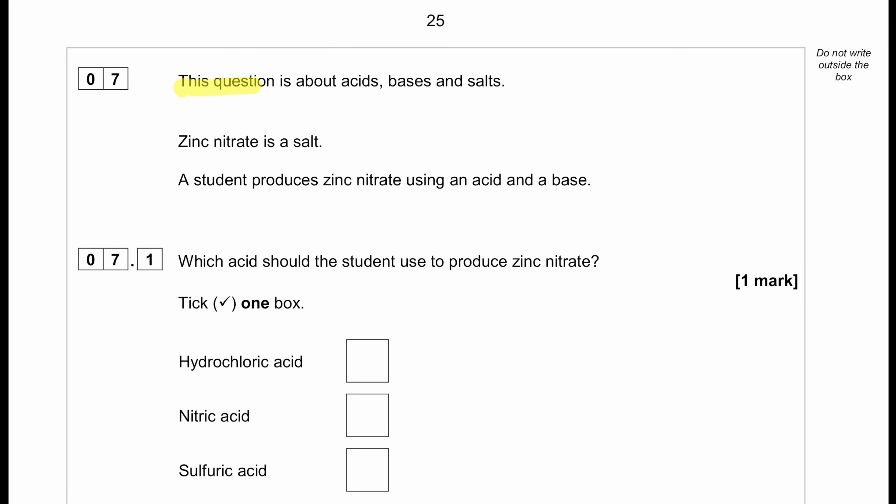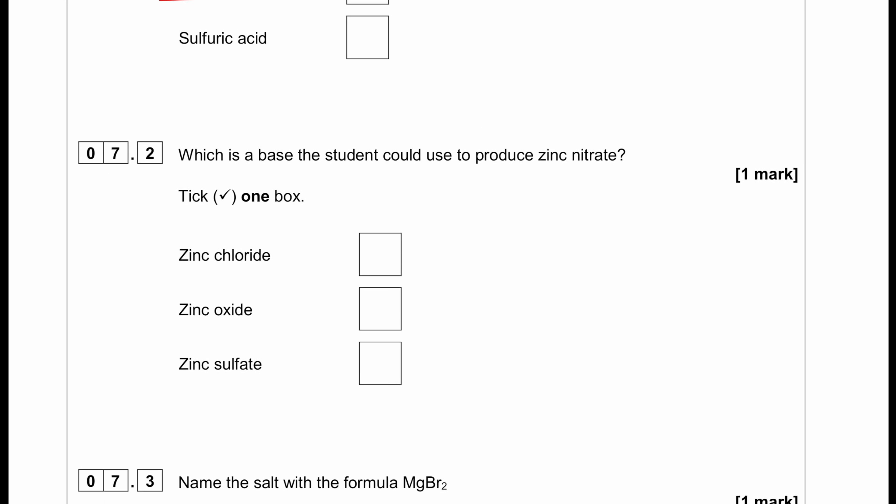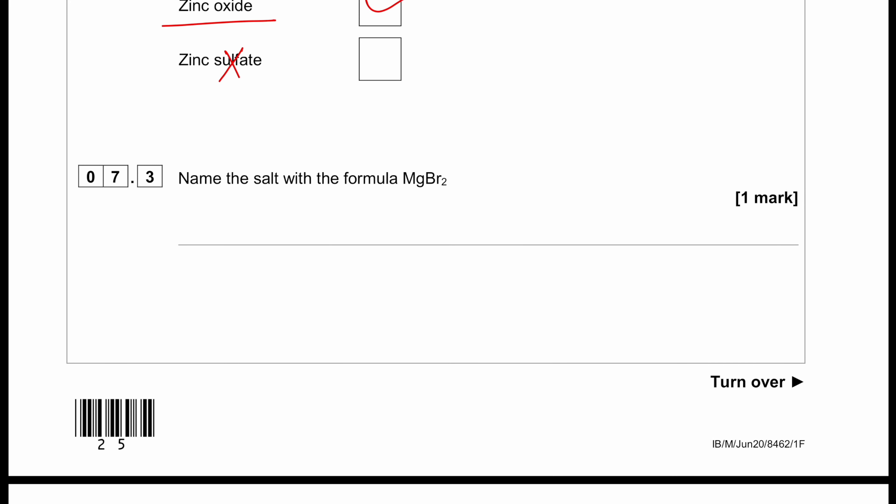Question number seven. This question is about acids, bases, and salts. Zinc nitrate is a salt. A student produces zinc nitrate using an acid and a base. Which acid should the student use to produce zinc nitrate? If we are making nitrate, then we will definitely need nitric acid. Which base could the student use to produce zinc nitrate? If we want to use a base to produce zinc nitrate, zinc chloride is a salt so cannot be used, zinc sulfate is also a salt. So zinc oxide. Remember, oxides, hydroxides, carbonates can be considered as base. Name the salt with the formula MgBr₂. This will be magnesium bromide.